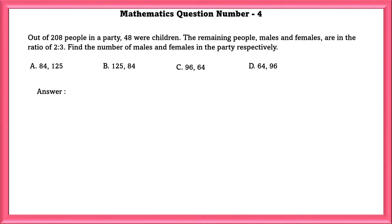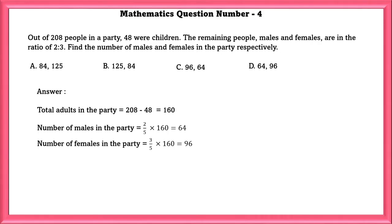Mathematics Question Number 4: Out of 208 people in a party, 48 were children. The remaining people, males and females, are in the ratio of 2 is to 3. Find the number of males and females in the party respectively. Total adults in the party is 160. Number of males in the party is equal to 2 by 5 times 160, which is equal to 64. Similarly, number of females in the party is equal to 96. So, the answer is D.